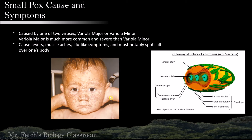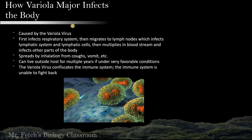The variola virus first infects the respiratory system, then it migrates through the lymph nodes, infecting the lymphatic system and lymphatic cells. Then it multiplies in the bloodstream and infects other parts of the body, like bone marrow. It infects by inhalation from coughs, vomit, etc. It can live outside the host for multiple years under very favorable conditions. The variola virus confiscates the entire immune system, and the immune system is unable to fight back.